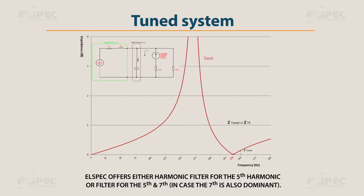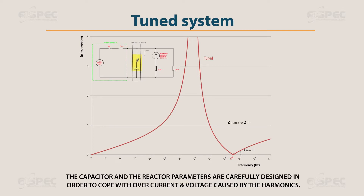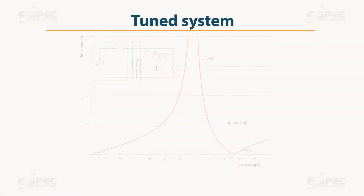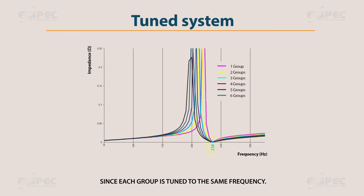L-Spec offers either a harmonic filter for the 5th harmonic, or filters for both the 5th and 7th in case the 7th is also dominant. The capacitor and reactor parameters are carefully designed to cope with overcurrent and voltage caused by harmonics. The filter can be designed to absorb approximately 80% of the relevant harmonics. Regardless of how many groups are connected, the tuned frequency of the series resonance is always approximately 238 Hz, since each group is tuned to the same frequency.